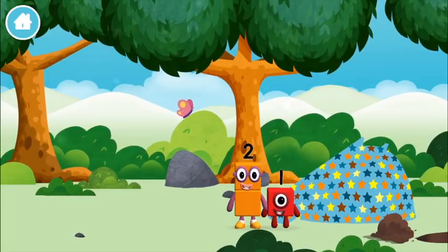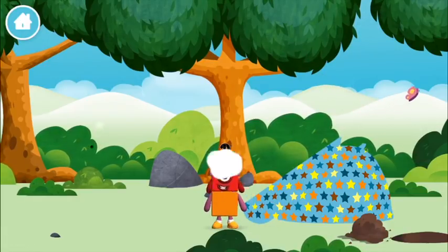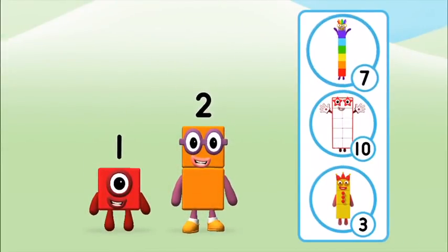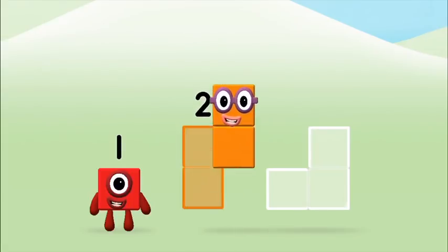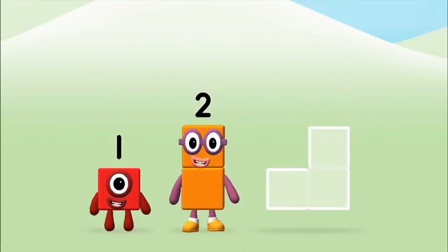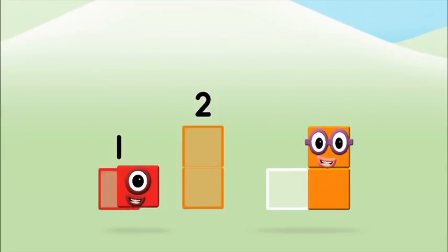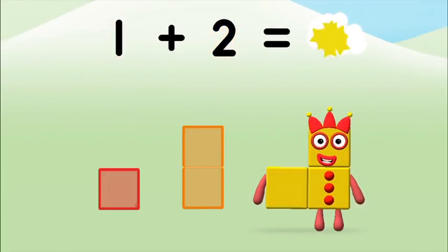Which number block is this? What number block will you make when you add these? Let's find out. Add the number blocks together. Two. Two. One. One plus two equals three.